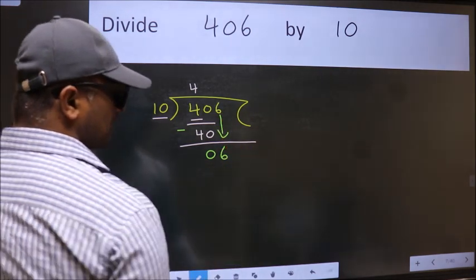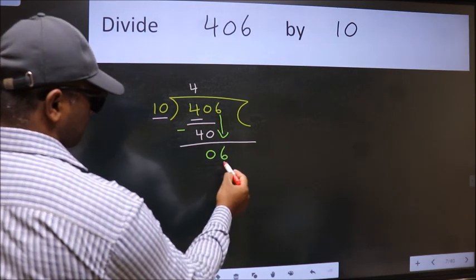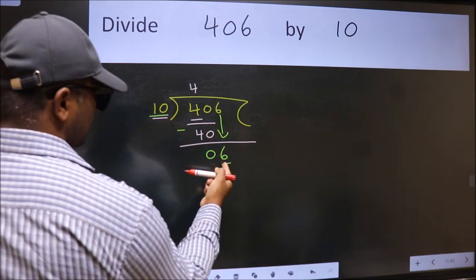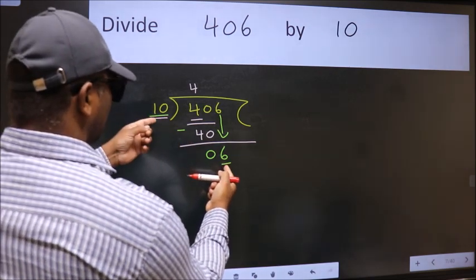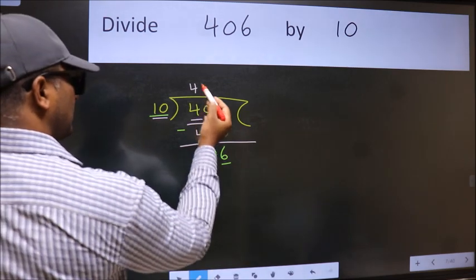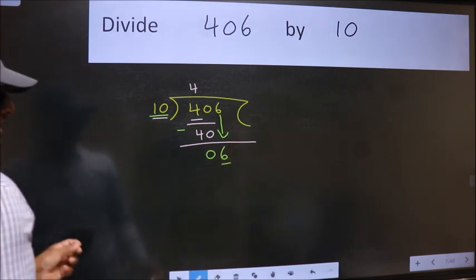After this step, the mistake happens and the mistake is this. Here we have 6 and here 10. 6 is smaller than 10. So what many do is they directly put the dot and take 0, which is wrong.